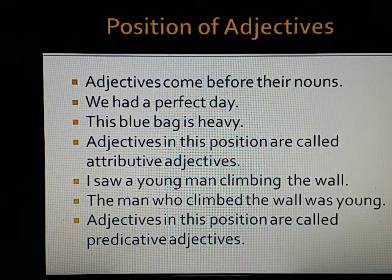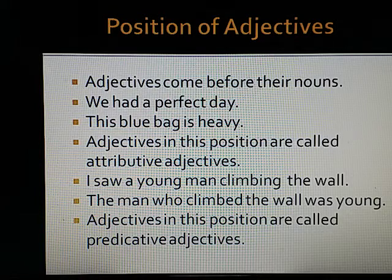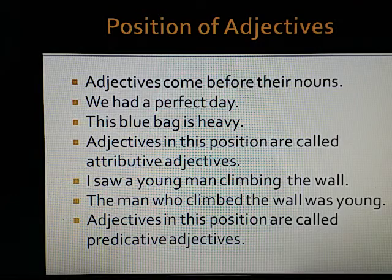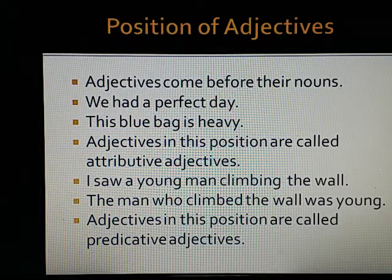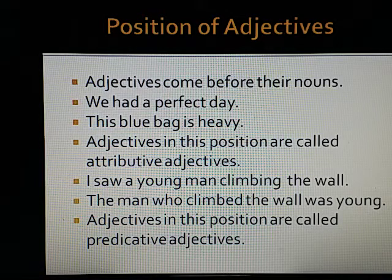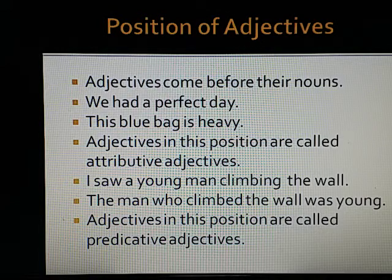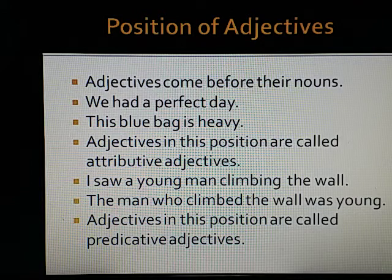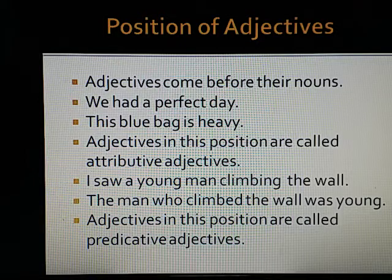Now we will discuss about the position of adjectives. Adjectives come before their nouns. Look at these examples: 'We had a perfect day.' 'This blue bag is heavy.' Adjectives in this position are called attributive adjectives. In these sentences, the adjective comes before the noun. The adjective is used attributively, or is an attributive adjective.